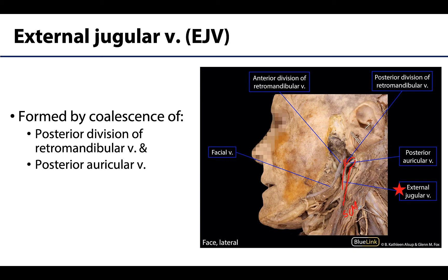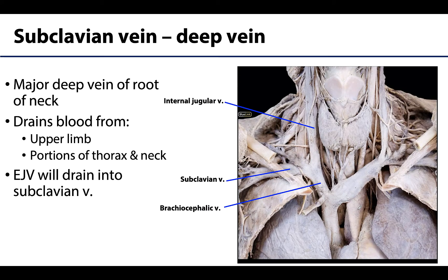The EJV will most typically drain into the subclavian vein, so let's talk a bit more about that. The subclavian vein is a major venous channel that drains the upper limb and portions of the upper thorax and the neck. It will pass anterior to the anterior scalene muscle, and you'll talk more about that with Dr. Fox in some other sessions, and it will unite with the internal jugular vein. We call this region the venous angle. Where the internal jugular vein and the subclavian vein join, you will have the formation of the brachiocephalic vein.